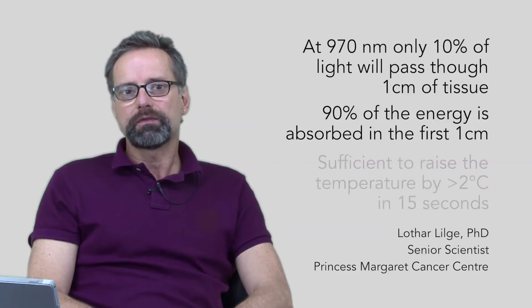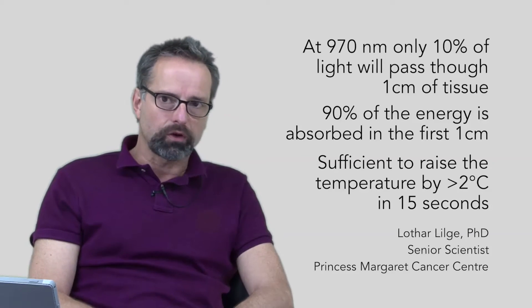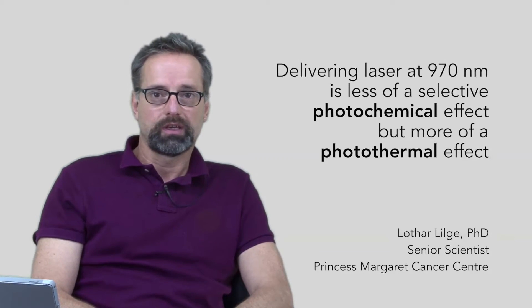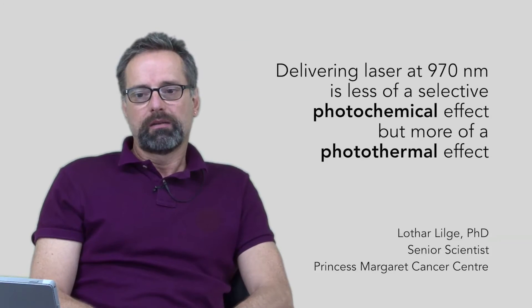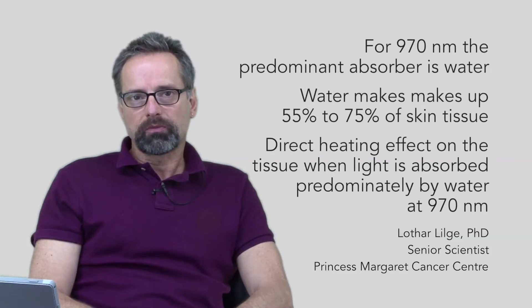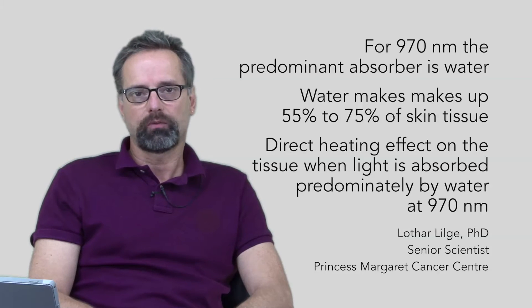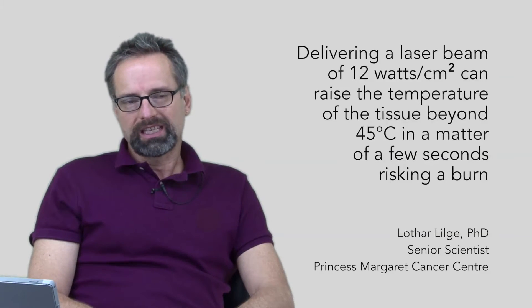In those 15 seconds we will deposit more than 10 joules per cubic centimeter or gram of tissue. 10 joules per gram is sufficient to raise the temperature of that tissue by more than 2 degrees C without the benefit of cooling through the blood. So the thermal load created at those power densities is sufficiently high to cause not so much a selective photochemical effect, but predominantly a photothermal effect — particularly at 970 nanometers where the predominant absorber is water, and tissue is comprised of between 55% and 75% water. Some people claim they can deliver up to 12 watts per centimeter square, but at those extremes you are essentially risking a burn.